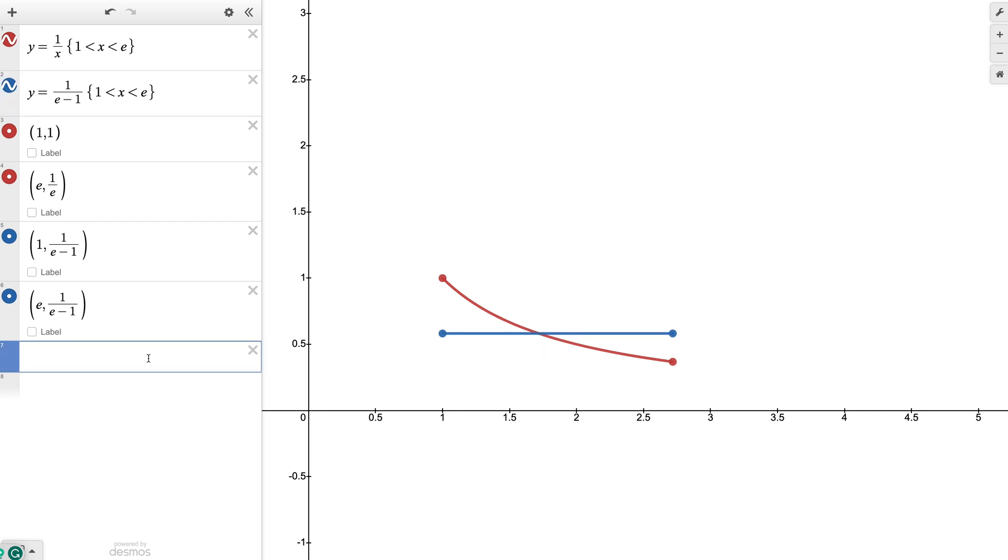So what do we have? We can see that the red line is our function and the blue line is about the average value of that function. If we averaged out everything that the red function, the 1 over x function is hitting here at all the y values, we get that nice blue line.